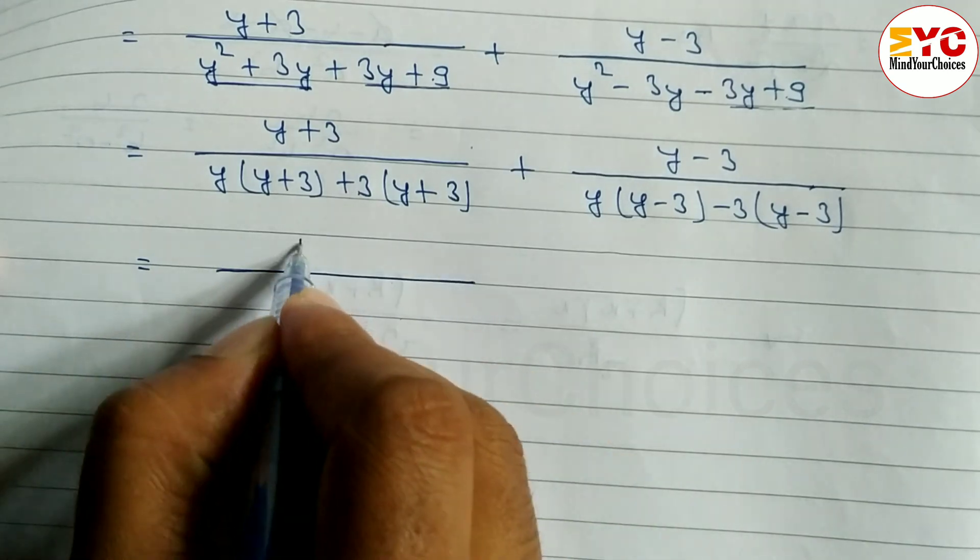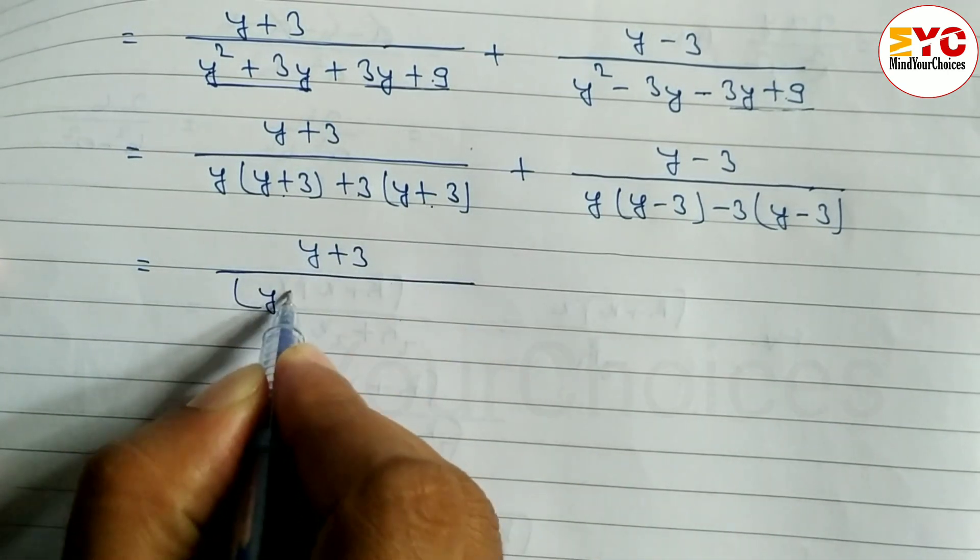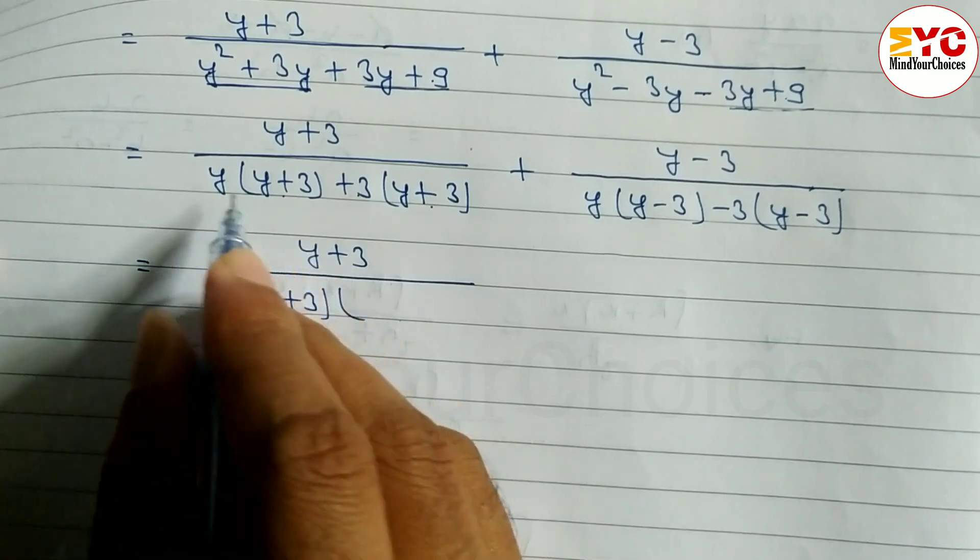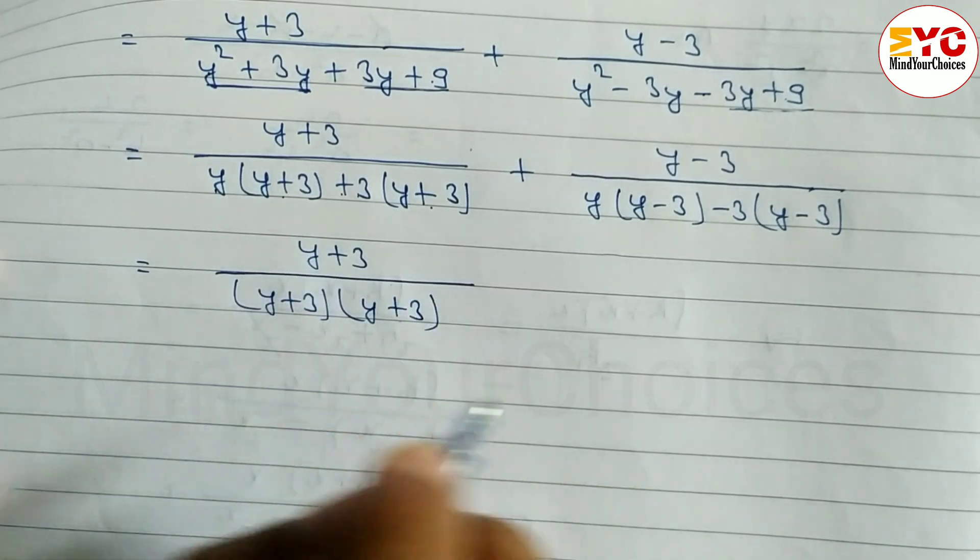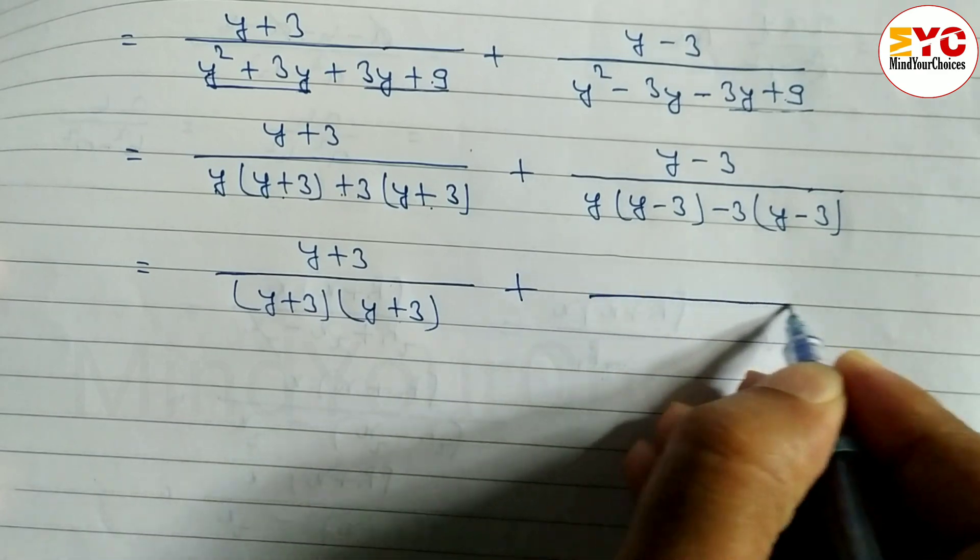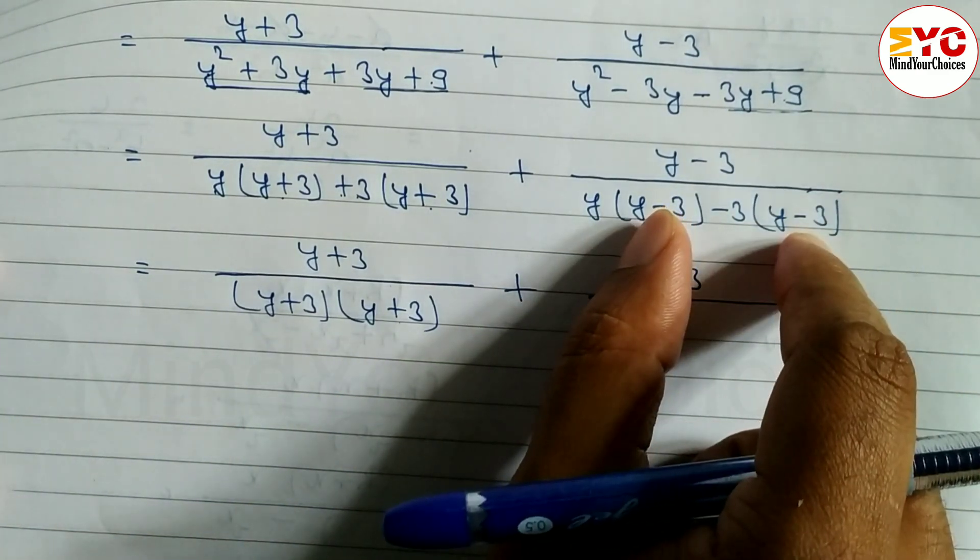This becomes (y plus 3) over (y plus 3)(y plus 3). Same with the other: y minus 3 over (y minus 3)(y minus 3). We can write it as y plus 3 common, then (y plus 3), and y minus 3 common, then (y minus 3).